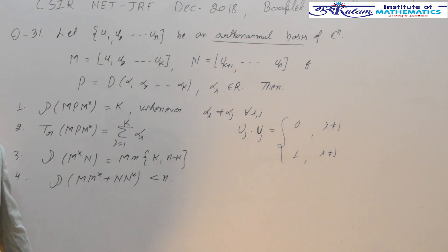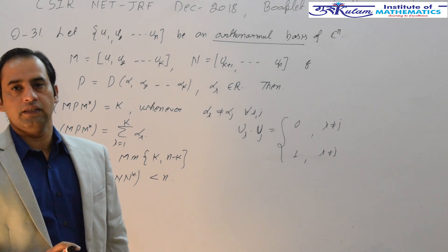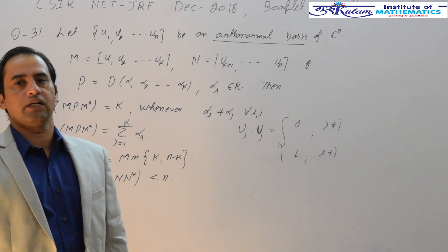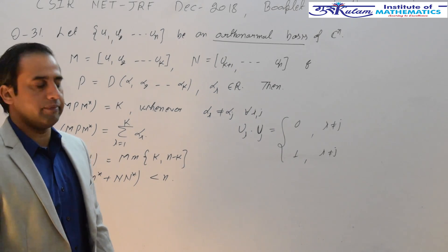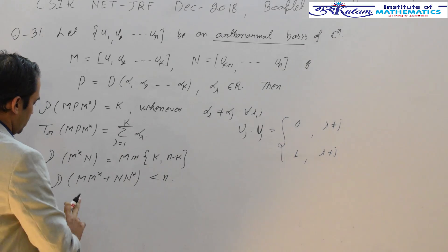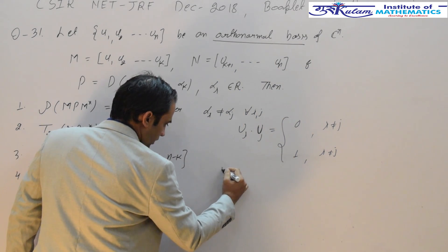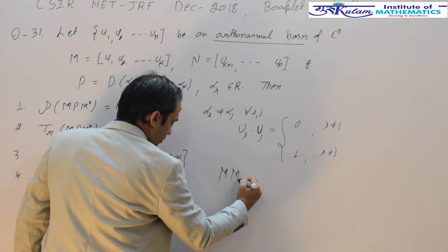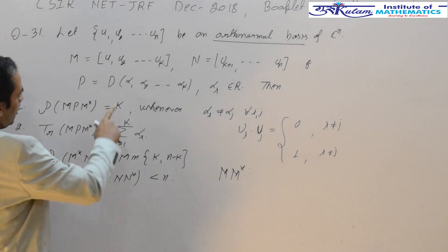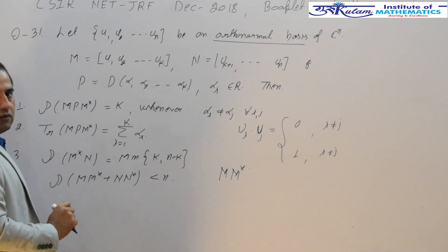We also know that every orthonormal basis, or every orthonormal subset of any vector space, is linearly independent. Based on this information, let's start with the question. I will start with option D: solving M times M-star.